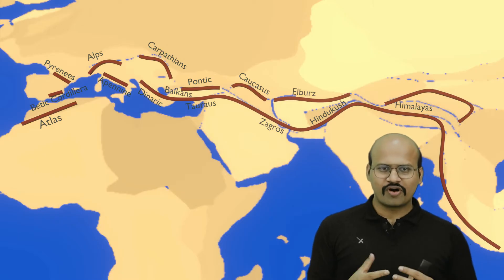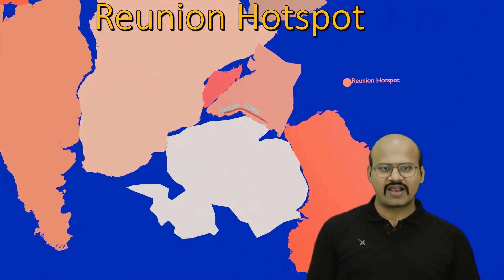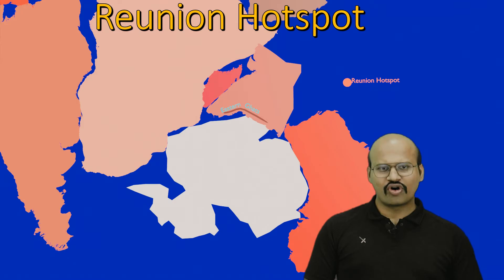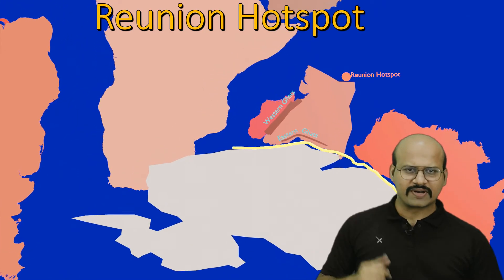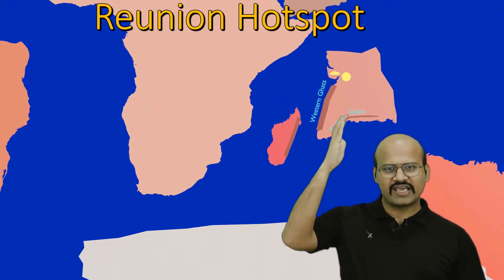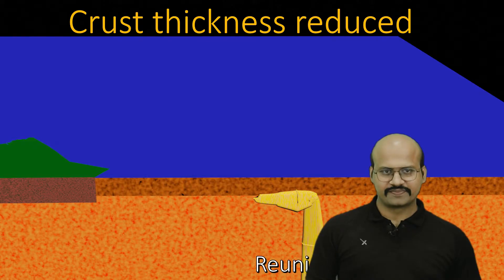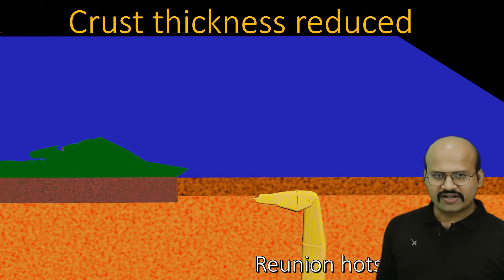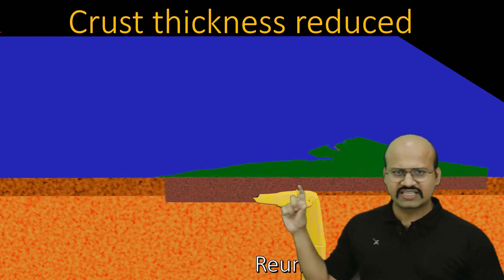Before going to the formation of Himalayas let's understand the role of the Reunion hotspot. The Reunion hotspot is located in our Indian Ocean. It was dormant for several million years. As our Indian plate got separated from the African, Antarctic, and Australian plates and started moving northward, it came over this Reunion hotspot, which then became active. The hotspot started to give out a lot of magma, which melted away a large part of our Indian plate, reducing its thickness.